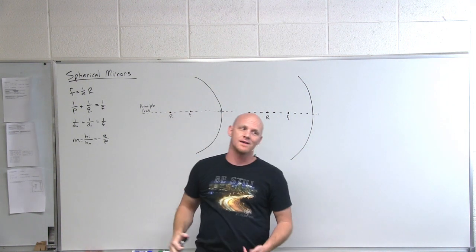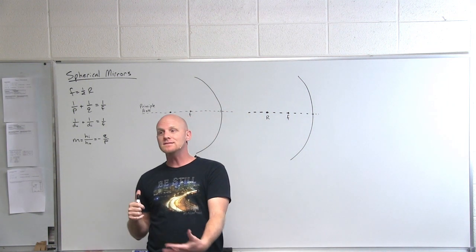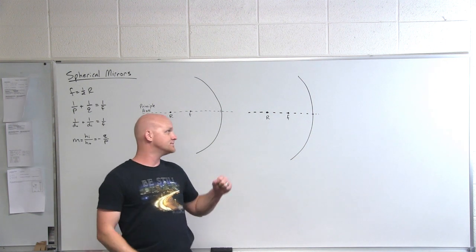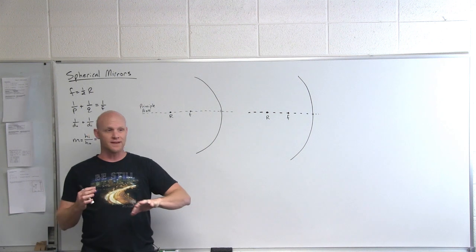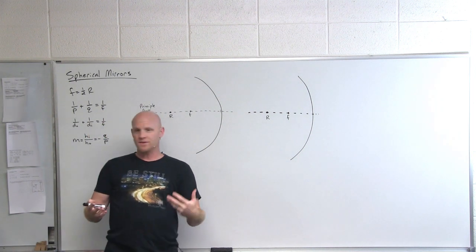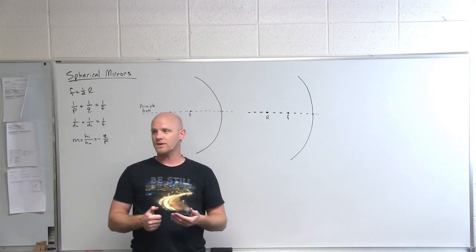We start with mirrors and then we'll apply everything we learn with mirrors to lenses which will be somewhat analogous. So we talked about reflection and refraction of light. We dealt with plane mirrors a little bit. We learned that the angle of incidence equals the angle of reflection with a plane mirror.